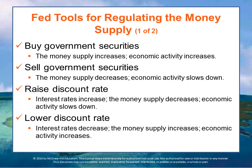The Fed can raise the discount rate — the rate of interest that banks have to pay in order to borrow money from the Fed overnight to cover their balances. Or they can lower the discount rate, which makes it easier to borrow money and therefore increases the money supply. Economic activity, therefore, increases as well.